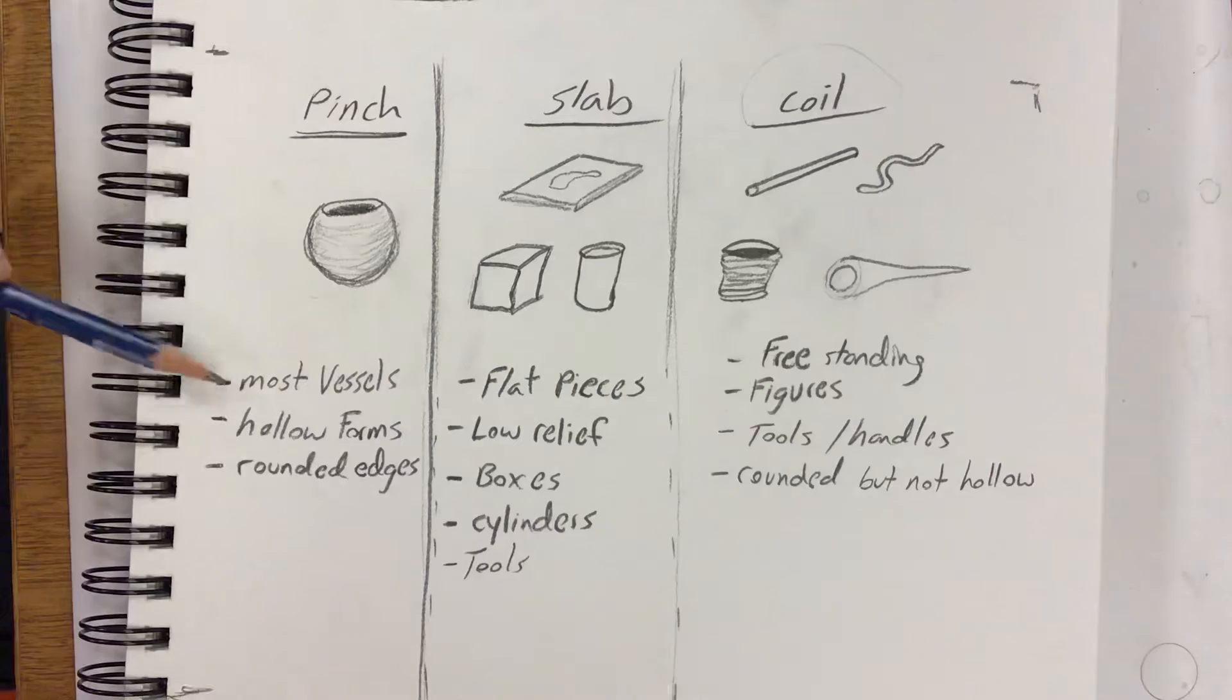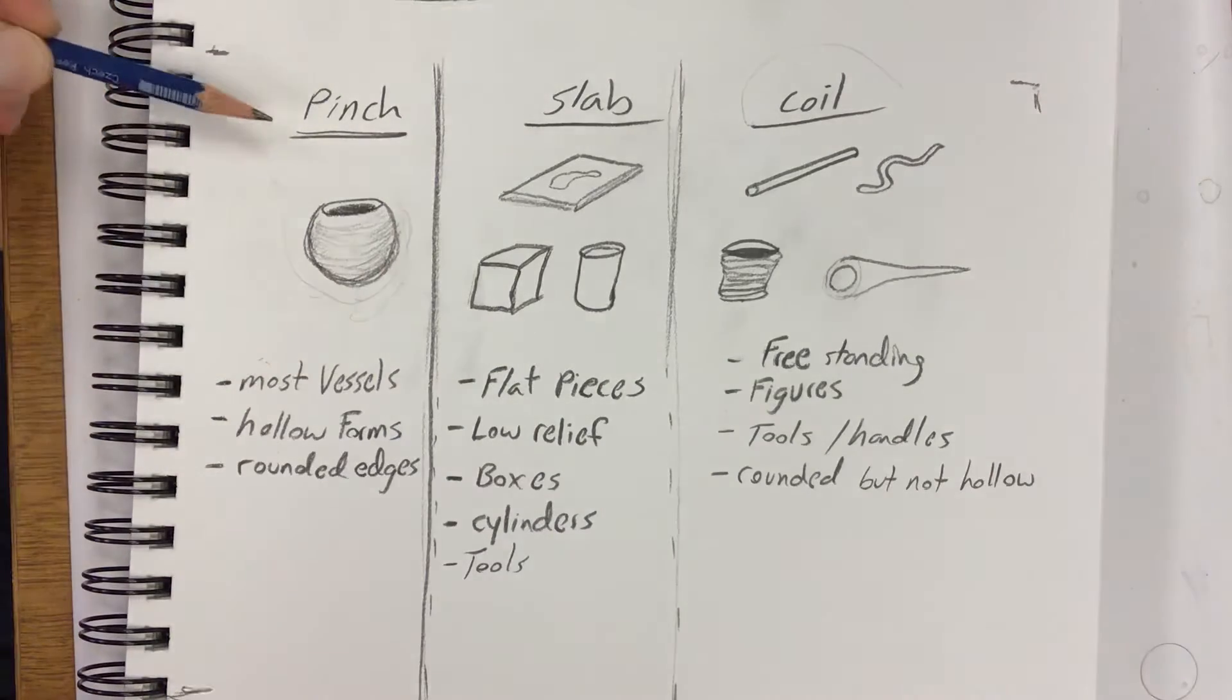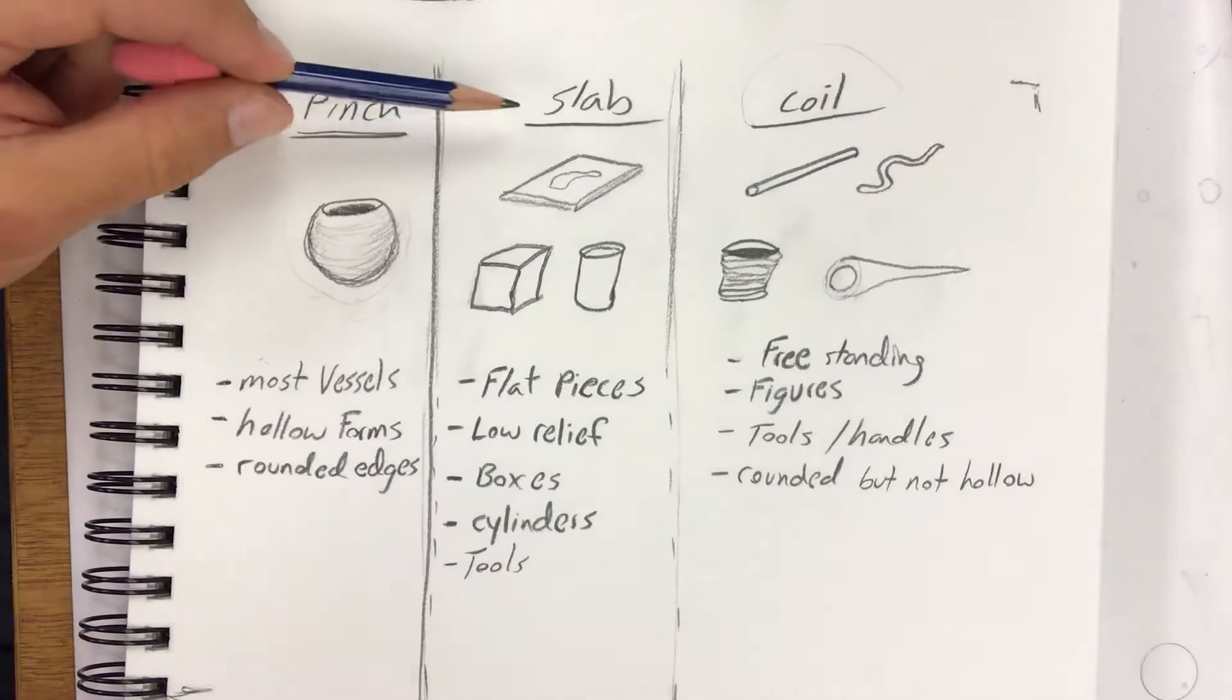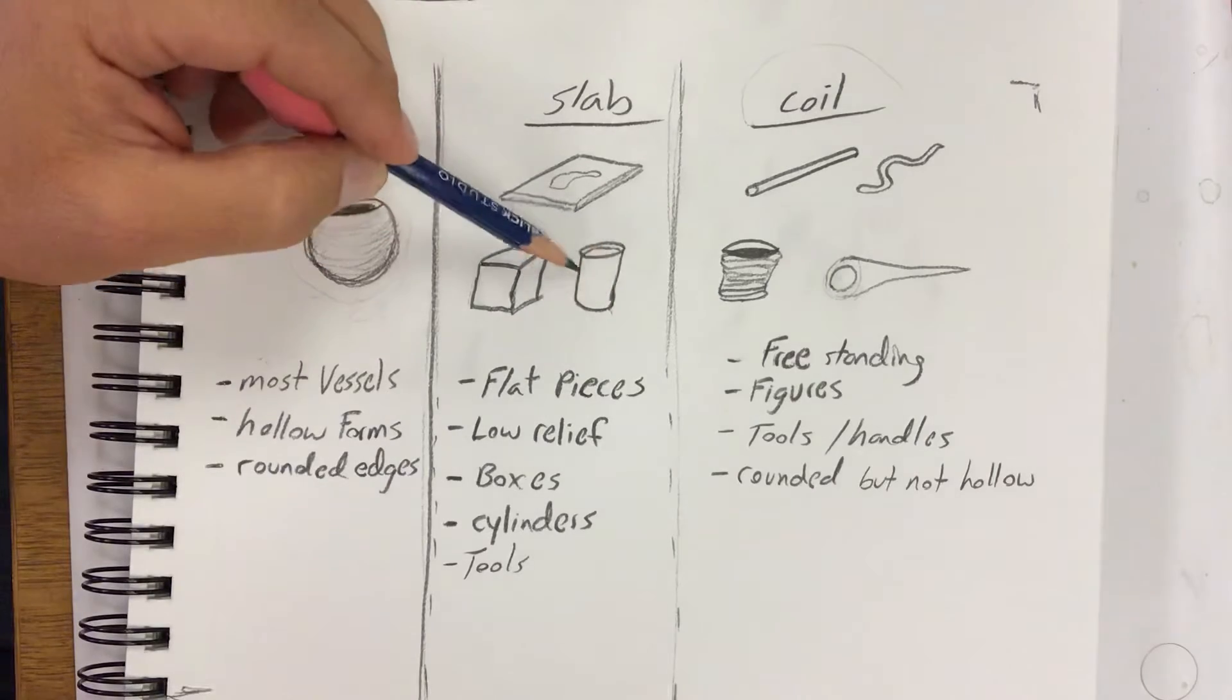For pinch, most of your vessels will fall into this. If you're needing that curved edge, it's definitely going to be a pinch. You're not going to really get that curve with a slab. On the other end, if you're doing a vessel with flat walls that's more of a cylinder shape, then slab would be the way to go.